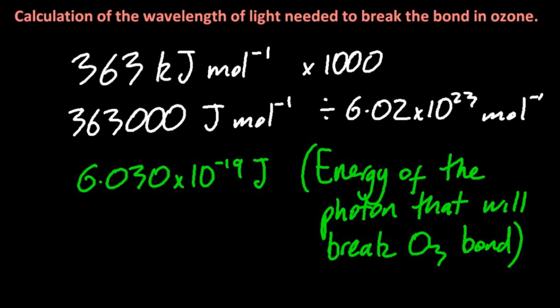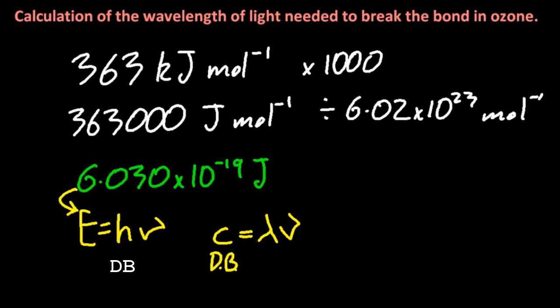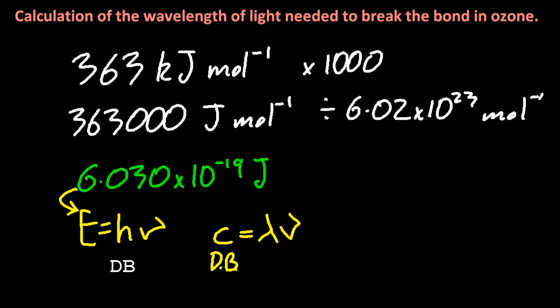So using these equations from the data booklet, H is Planck's constant, that's from the data booklet, as is C, the speed of light, you can work out the wavelength of the light needed to break that bond. 3.30 times 10 to the minus 7 meters, which is 330 nanometers.